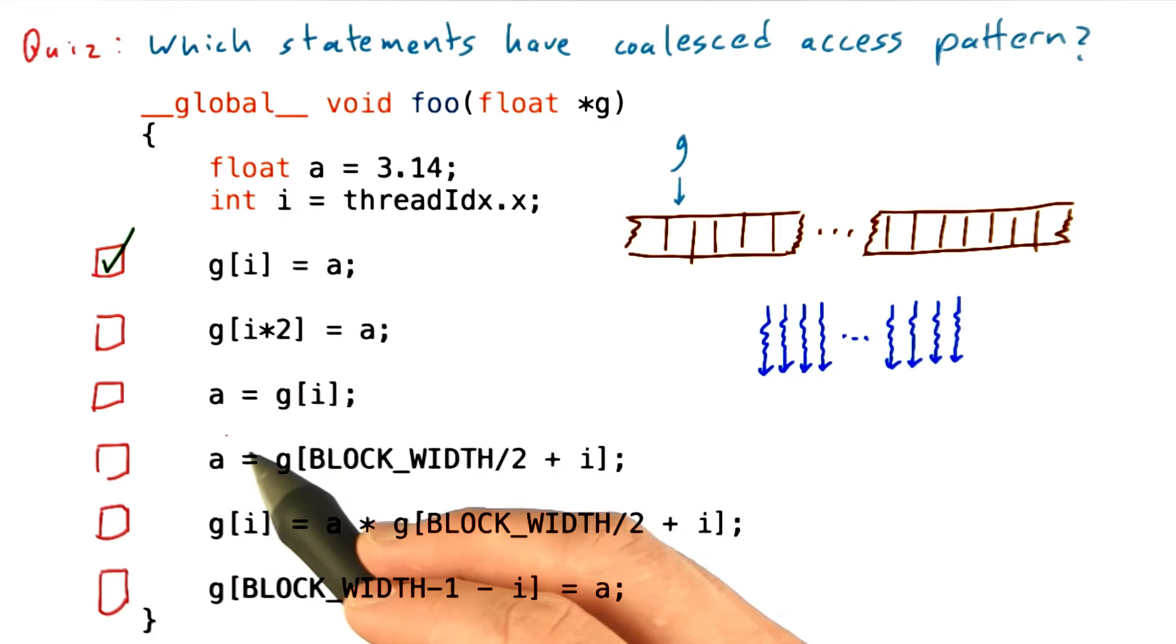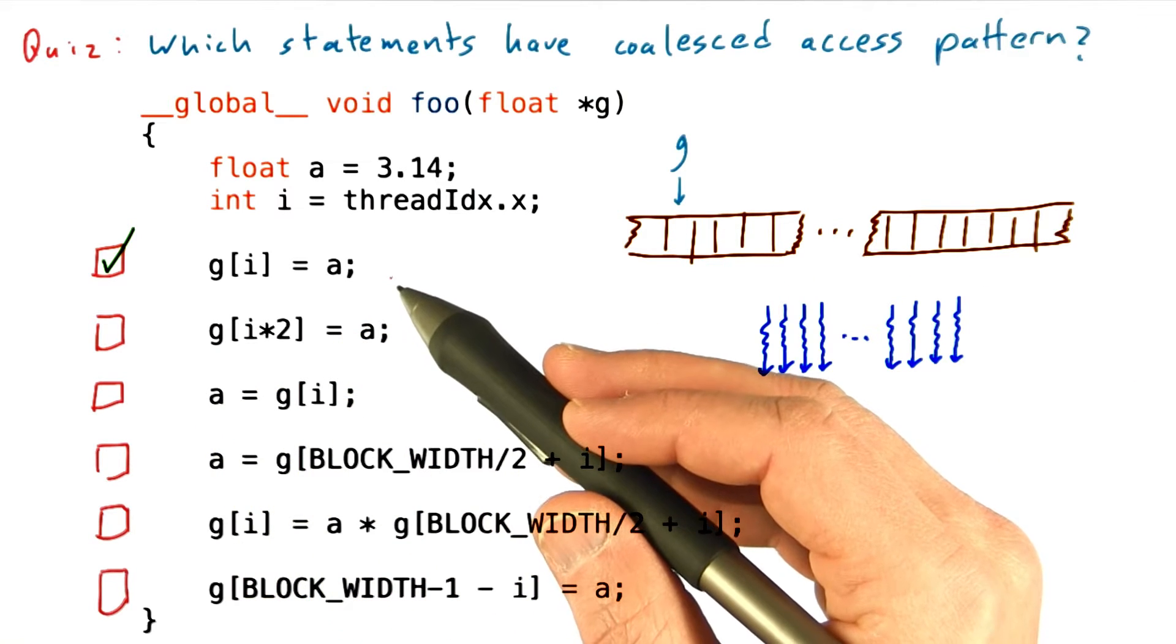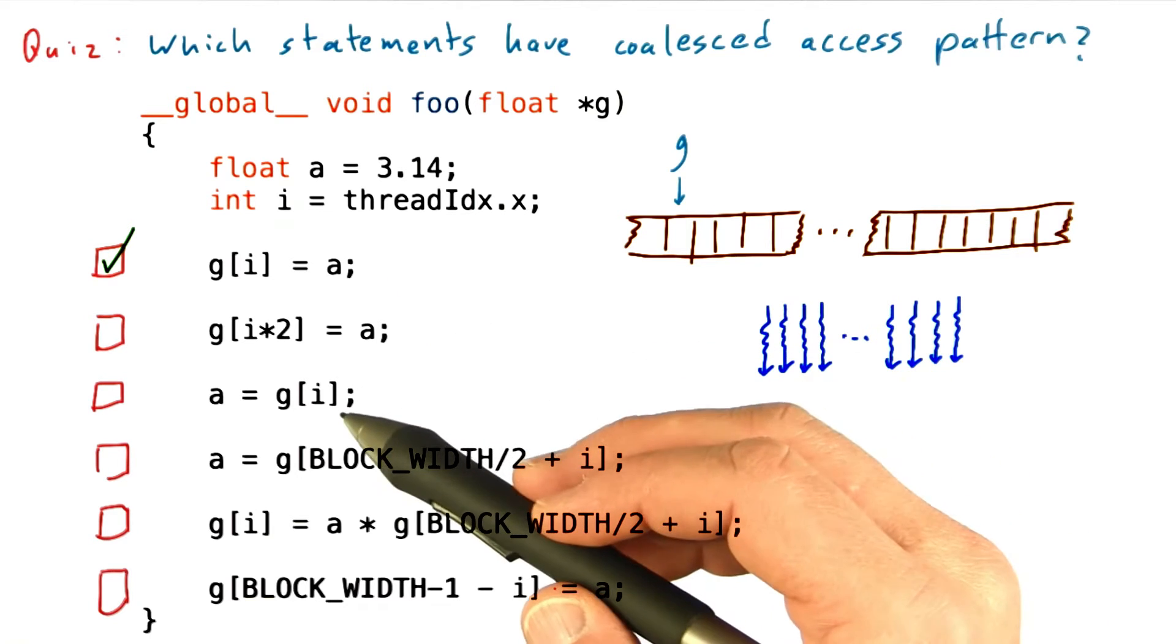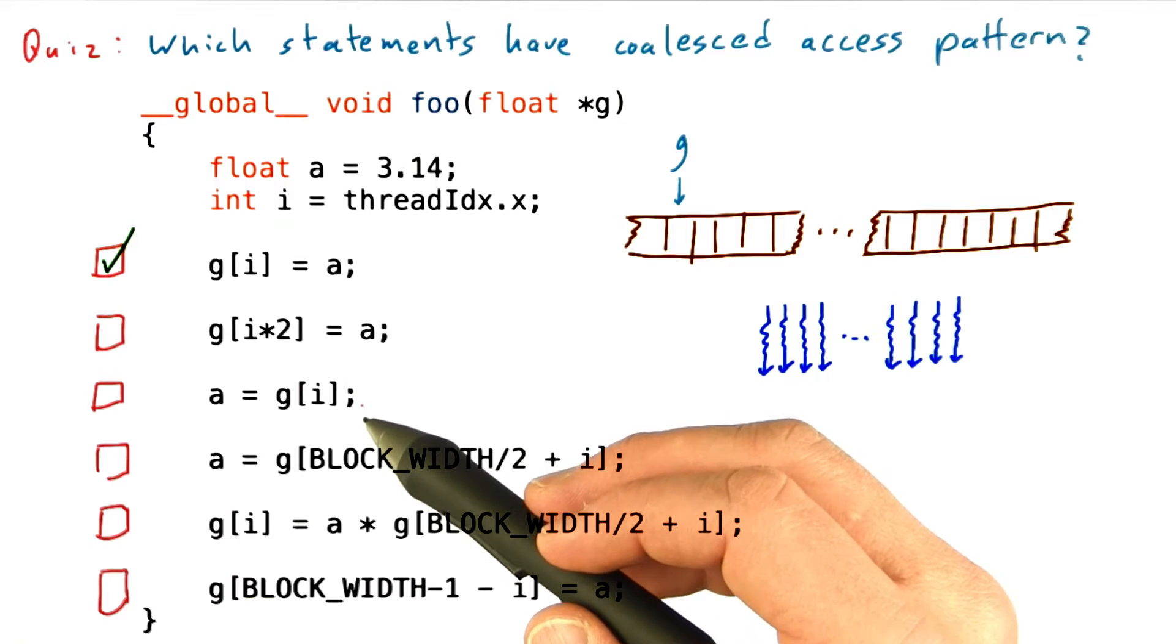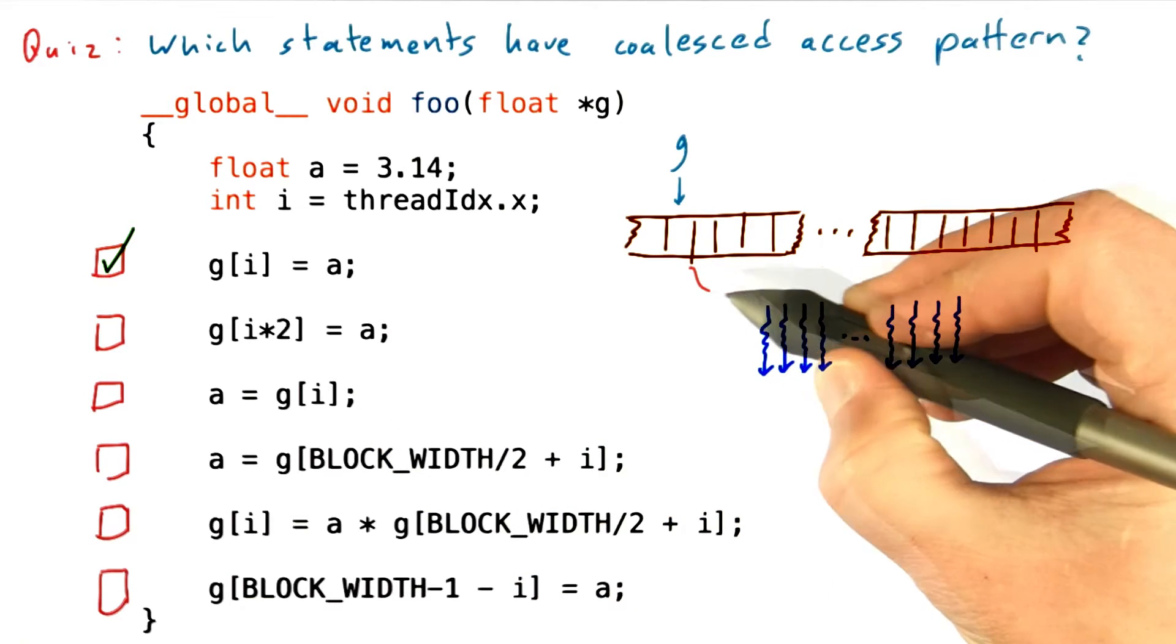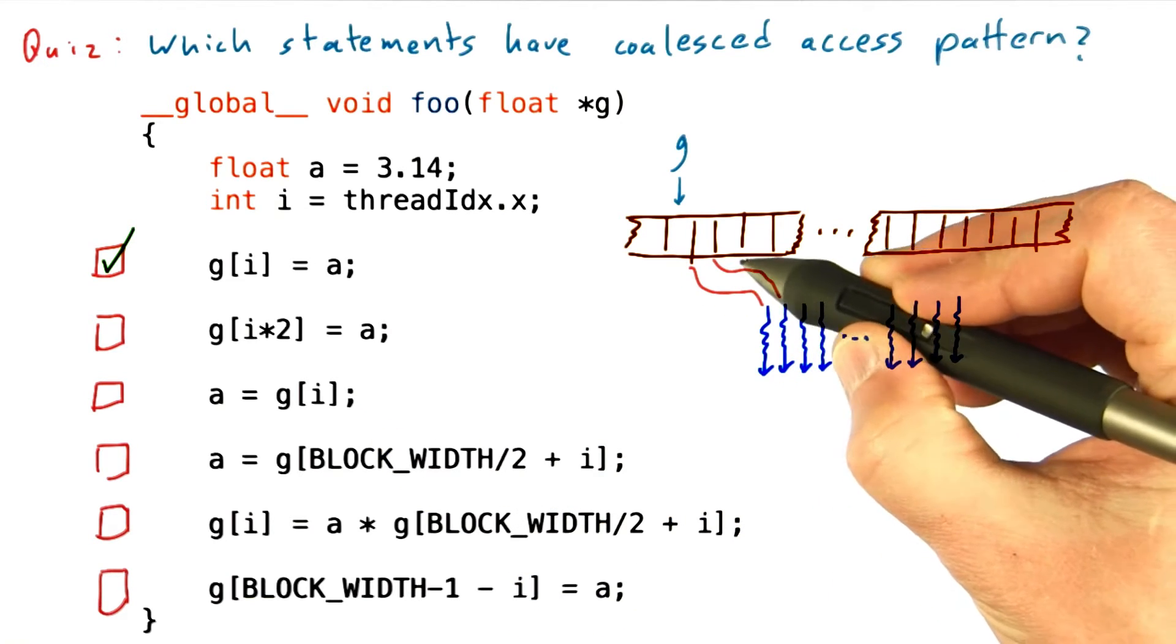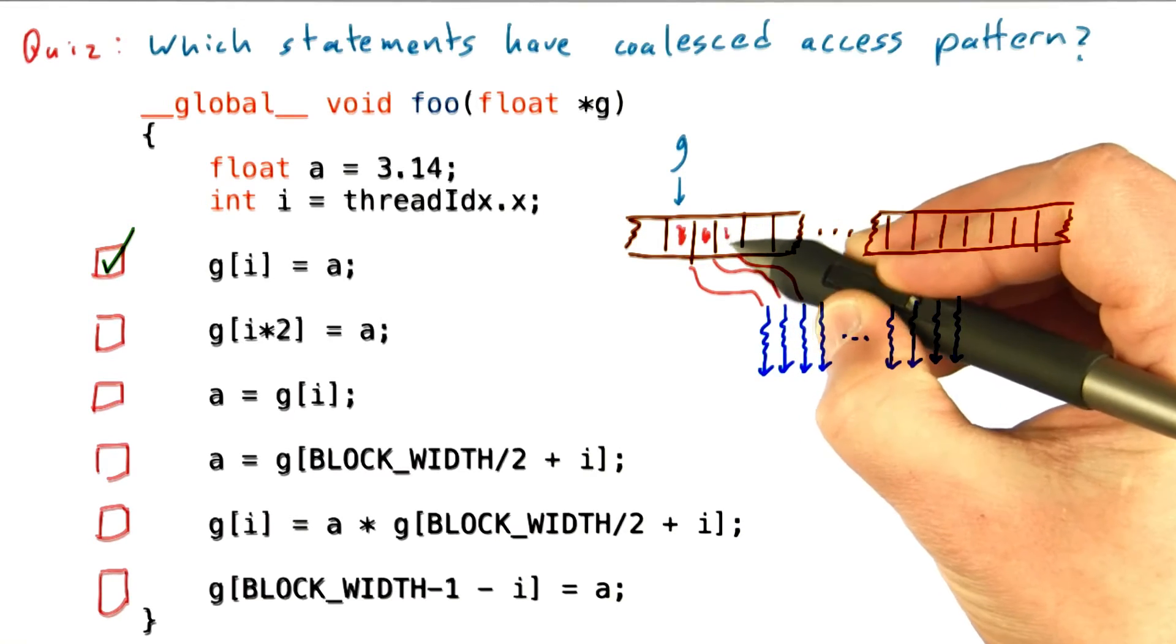This next access pattern is exactly like the first time, except that we're doing reads instead of writes. So again, every thread is simply reading a location defined by its own index in memory. Therefore, adjacent threads will access adjacent locations in memory. And just like the first example, we're going to have a nice coalesced access pattern.